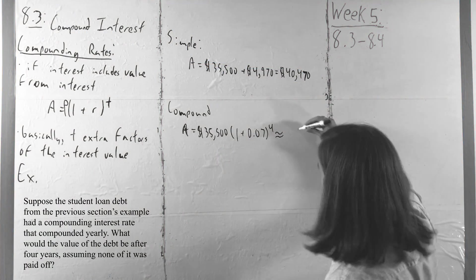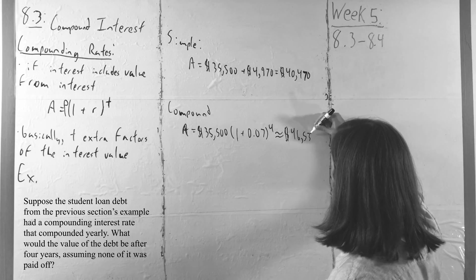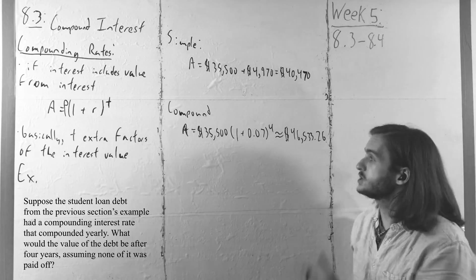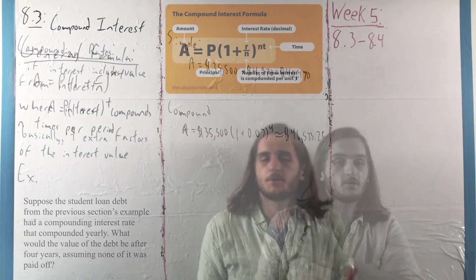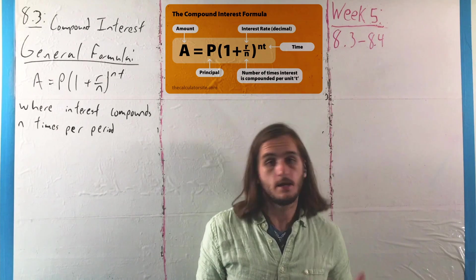In our previous example, when we talked about this, we kind of made the assumption that interest will only compound once per period. In particular, that was once per year, but there's no reason to restrict ourselves in that way.